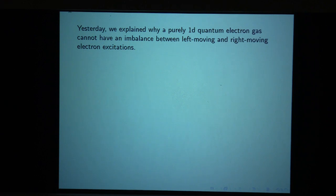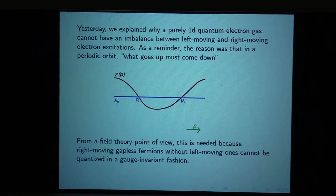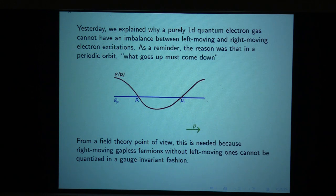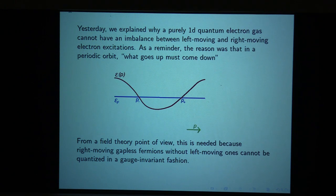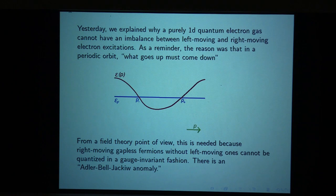Yesterday we explained why a purely one-dimensional quantum electron gas cannot have an imbalance between left and right-moving electron excitations. The reason was that in a periodic orbit, what goes up must come down, so the band energy goes through the Fermi energy as many times going up as going down. From a field theory point of view, that's needed because right-moving gapless fermions without left-moving ones cannot be quantized in a gauge-invariant fashion — there is an Adler-Bell-Jackiw anomaly.